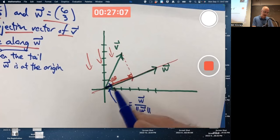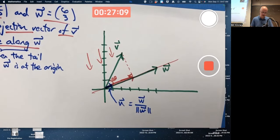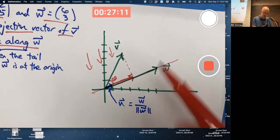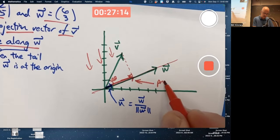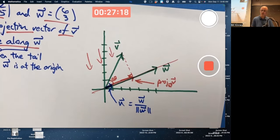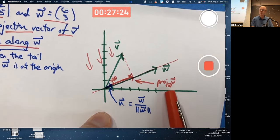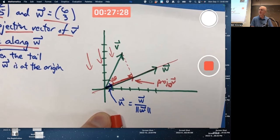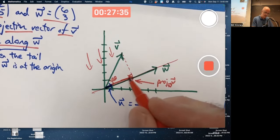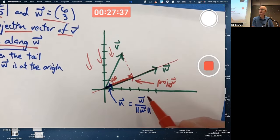If I could figure out how long this red vector should be, this red vector is the projection vector of V along W, or along the line through W. If I could figure out the length of this projection vector, I would be done by just multiplying U by that length. So, you can easily figure out the length using trigonometry.